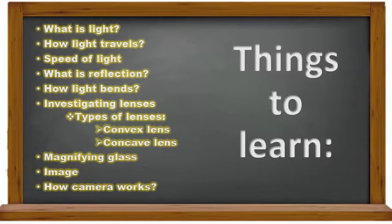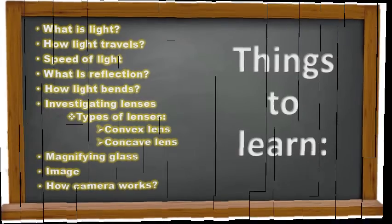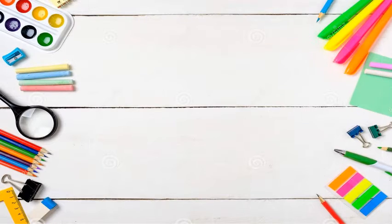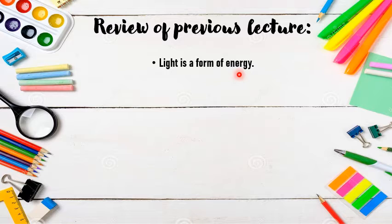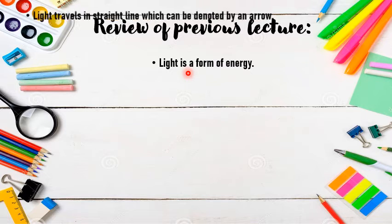We have learnt up till reflection, so today we are going to continue from how light bends. Before starting the new material, let's review our previous lecture. We learnt that light is a form of energy, and the biggest source of light is the sun.